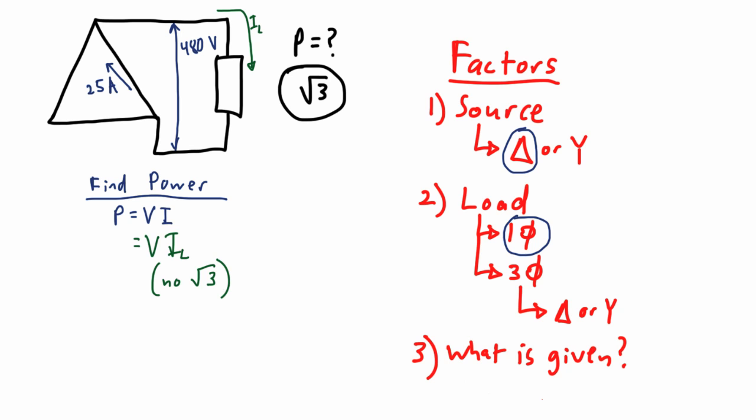But the current given is phase current, so we need to convert it to the line current. So we're moving from the phase current over to the line current. And it is here that we see a very important principle that you need to remember.